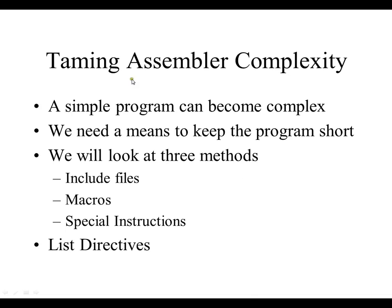So taming assembler complexity is the name of this section. A simple program can become complex, so we need a means to keep the program short. We look at three methods: include files, macros, special instructions, and then we talk about the list directive.